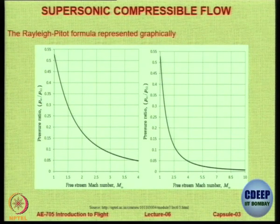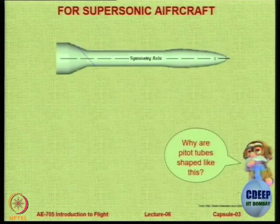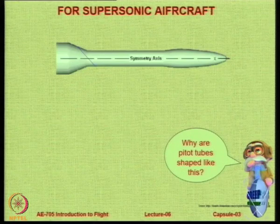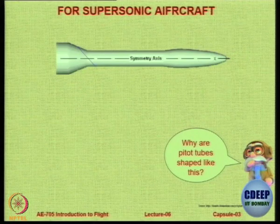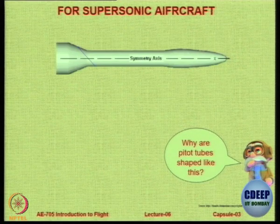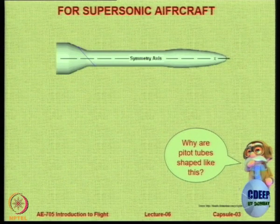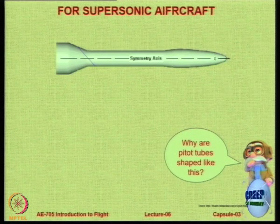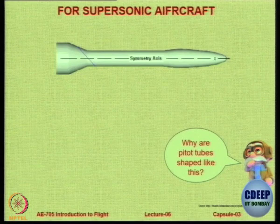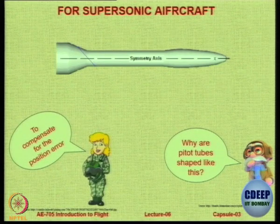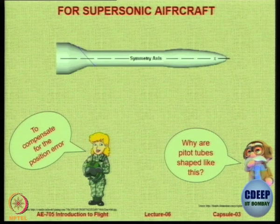This is the Rayleigh-Pitot formula which is coded into the pitot tube. The shape you will see for a pitot-static tube used on aircraft that fly faster than the speed of sound features a central symmetry axis, a bulbous nose in the front, and a conical section at the back. The question is: why are pitot tubes shaped like this on supersonic aircraft? The answer is that we need to compensate for the position error — the error that arises because of the tube's position and because of the presence of shocks.